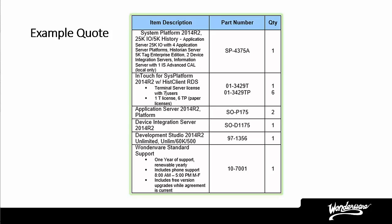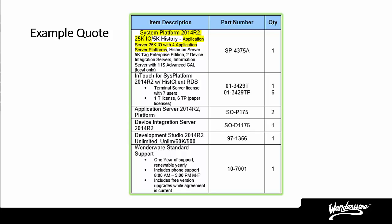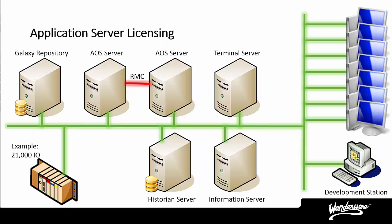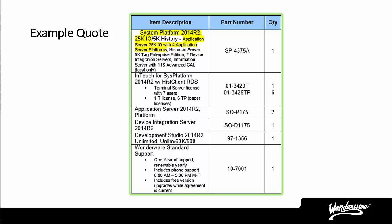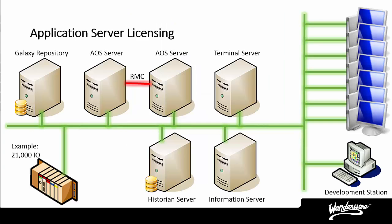Here is our example quote. The Application Server portion of the quote is here. We stated previously that the Wonderware Application Server is licensed by I/O. In our example, we have one or more devices that we are communicating to, and the total number of variables that we read or write is 21,000. So you can see that the license enables up to 25,000 I/O. Next, we stated that the Wonderware Application Server is also licensed by platforms, so we need to count the number of platforms.